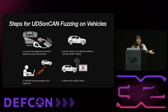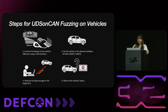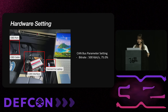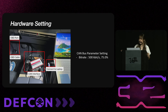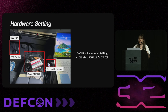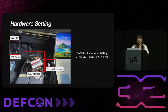Here are the attack steps: connect the laptop to the vehicle's OBD port using a CAN interface, start the engine, then send the message and observe the vehicle. It's that simple. This photo shows the hardware setup — the OBD cable is connected to the OBD port, the laptop is connected via the CAN interface, and the CAN bus parameters are set to standard values.